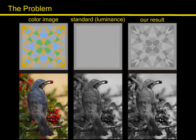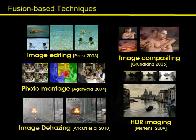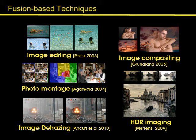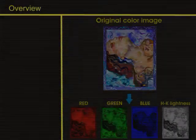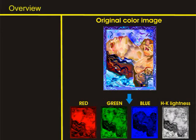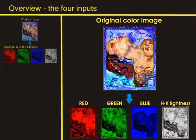In this work, we introduce an alternative decolorization strategy built on image fusion principles. Image fusion is a well-studied technique which has found many practical applications; however, we are the first to develop a fusion-based decolorization technique. The inputs for our algorithm are the three independent RGB channels, and one additional input that conserves the color contrast, based on the Helmholtz-Kohlrausch effect.